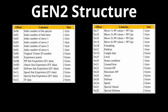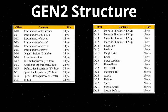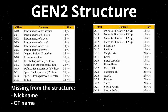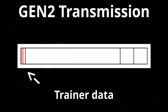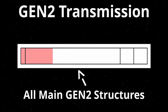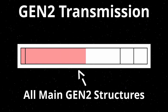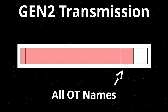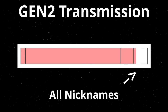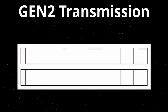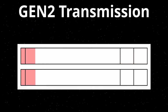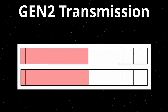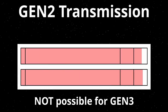The structure of a Gen 2 Pokemon is a bit different. The main structure does not contain the nickname and the name of the original trainer, so they are sent separately afterwards. First the game will send the main data of all six Pokemon, then the name of the original trainer of all six Pokemon, and lastly the nicknames. So normally both games transmit their data at the same time, but for Gen 3 I have to wait.